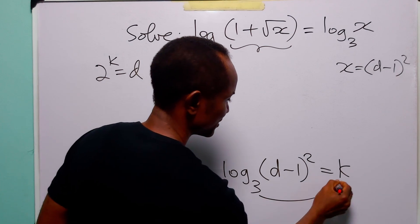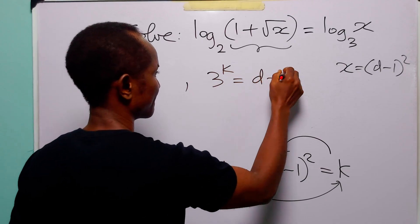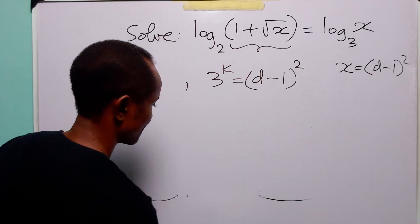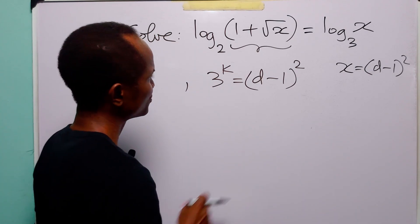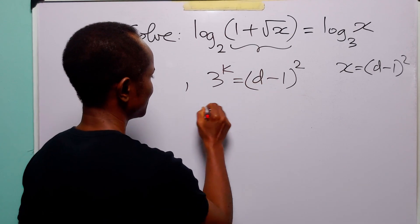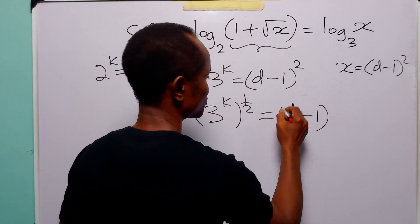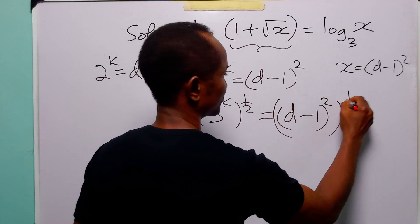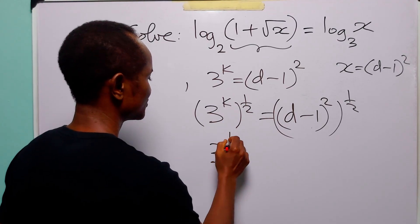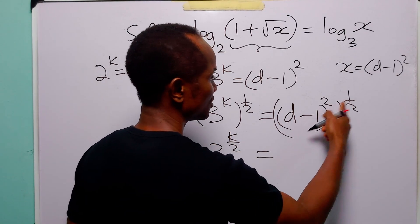And here, three to the power k is equal to (d minus one) squared. The next thing we are going to do is to take the square root of both sides of this equation. When we do that, we have that three to the power k to the power half is equal to (d minus one) squared to the power half. To open this bracket we simply multiply these two powers, so here we have three to the power k over two.